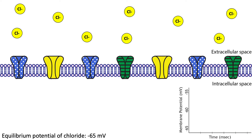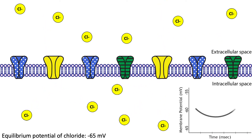An inhibitory post-synaptic potential, or IPSP, on the other hand, is caused by the opening of chloride channels. The equilibrium potential of chloride is negative 65 millivolts, so if the neuron is at rest at negative 60 millivolts, when the chloride channels open, the electrochemical gradients drive chloride to flow into the cell. Chloride brings its negative charge into the cell, causing the cell's membrane potential to become more negative, or hyperpolarize. This change is called a hyperpolarization because the cell's membrane potential is moving away from zero millivolts, and the membrane is becoming more polarized.